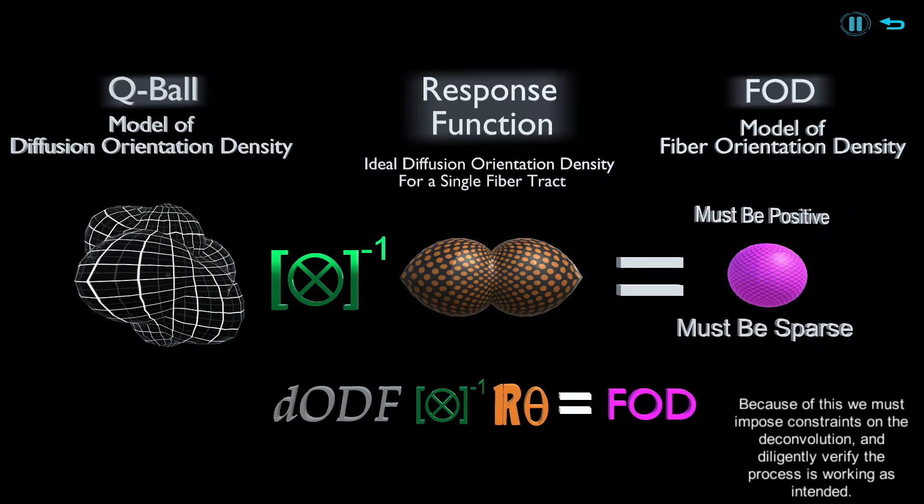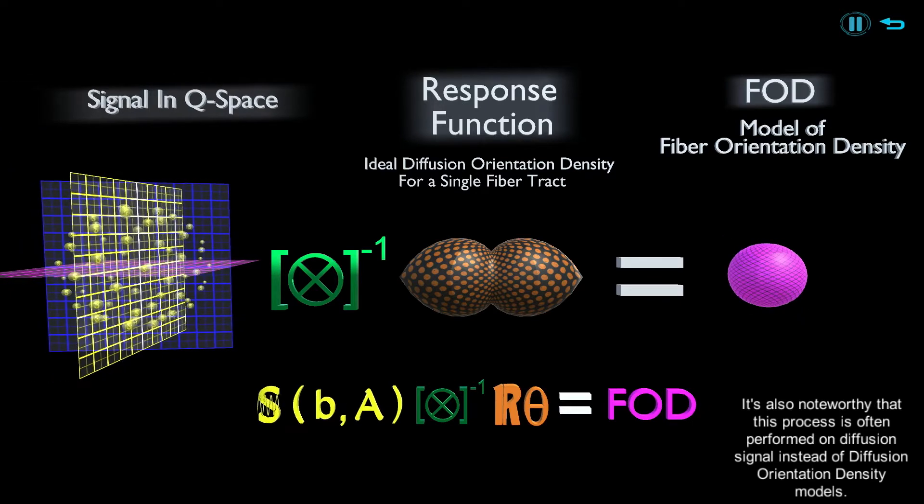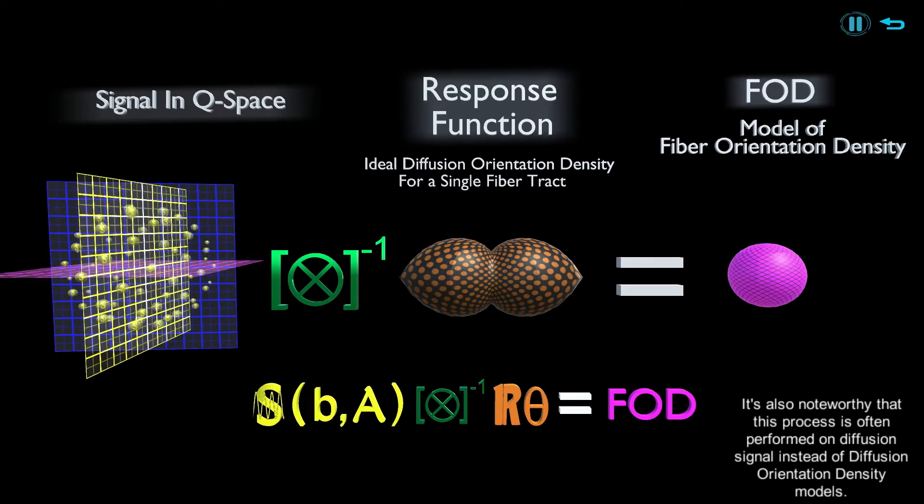Because of this we must impose constraints on the deconvolution and diligently verify the process is working as intended. It's also noteworthy that this process is often performed on diffusion signal instead of diffusion orientation density models.